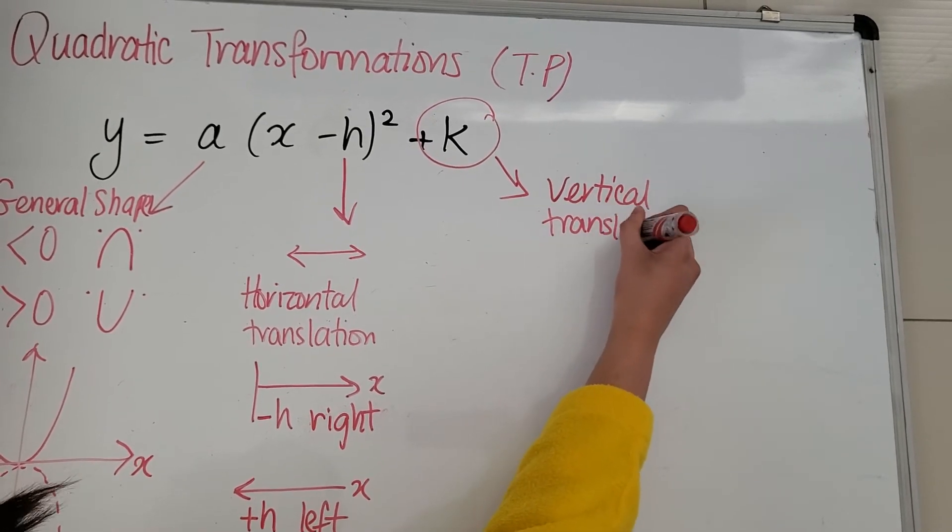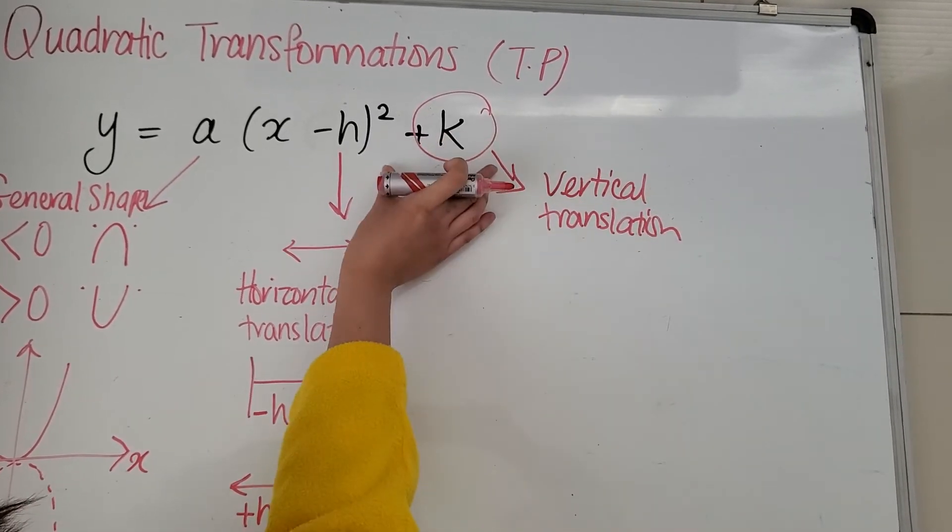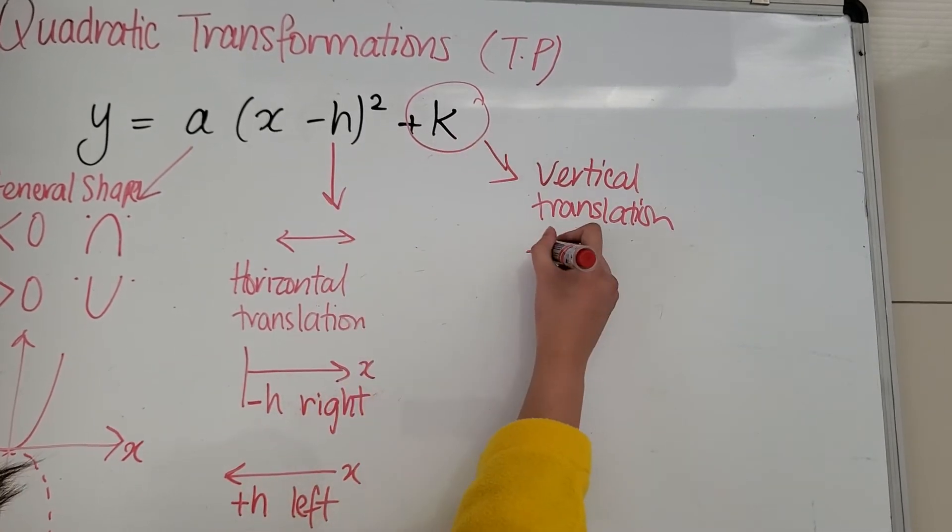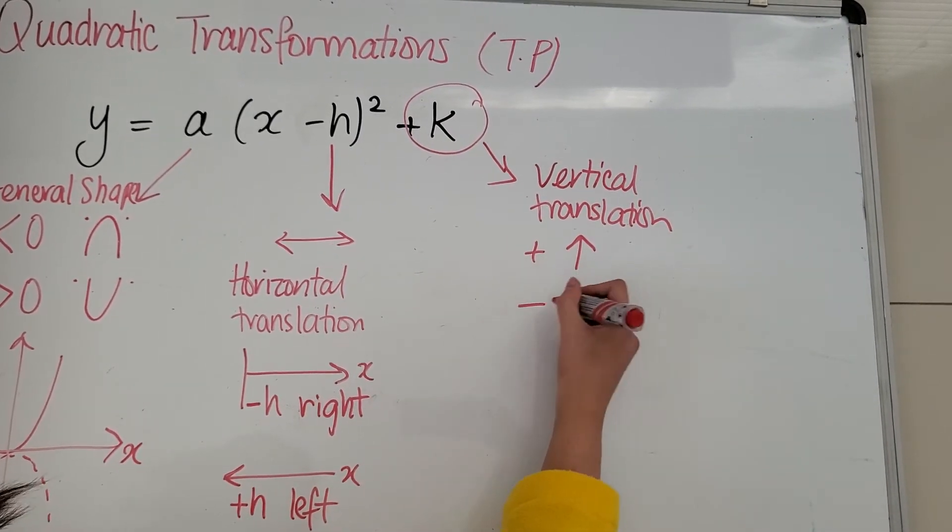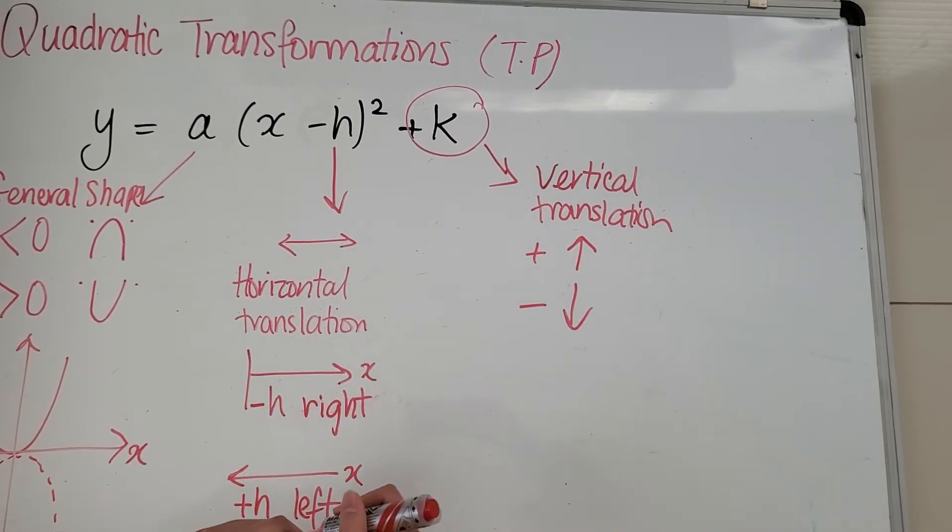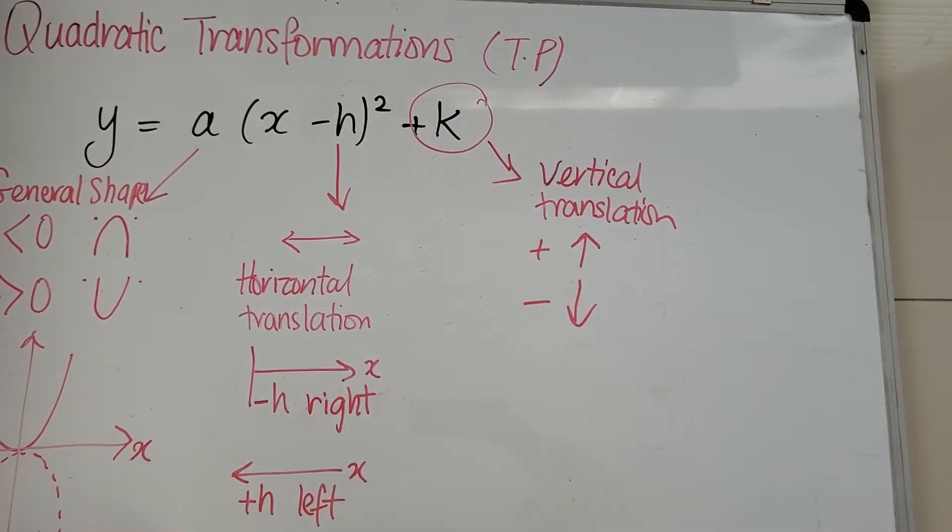See how it's not part of any brackets. It's not within any brackets, which means if it's positive, it goes up. Negative, it goes down. And that's all for these transformations.